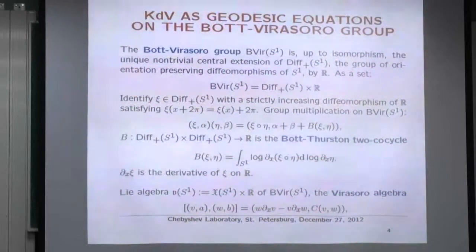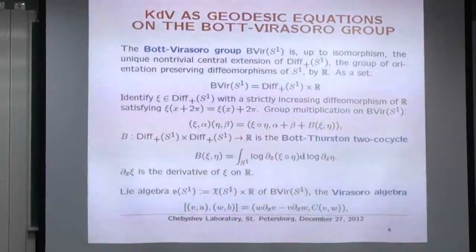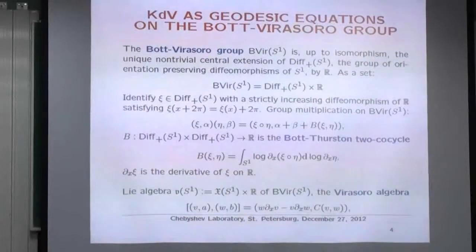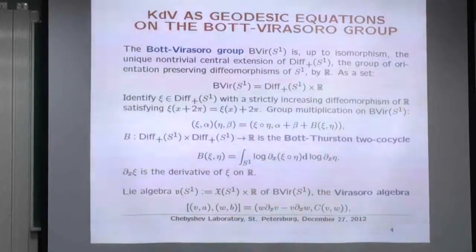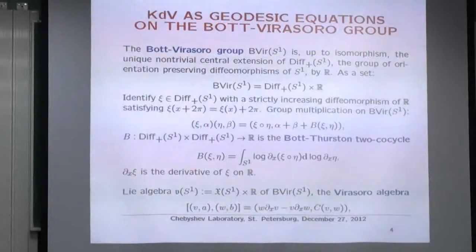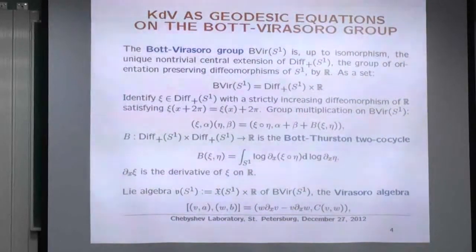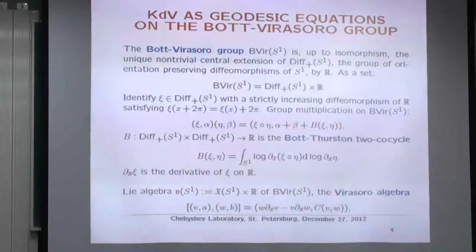As an example: KdV is a geodesic flow on the Bott-Virasoro group. The Bott-Virasoro group is a product of orientation-preserving diffeomorphisms of the circle times ℝ. I identify any such diffeomorphism with a homeomorphism of the line that goes like a helix, moving by 2π. The multiplication is not a direct product — I put a group 2-cocycle: (α, a)·(β, b) = (α∘β, a + b + B(α, β)), where B is the Bott-Thurston cocycle.